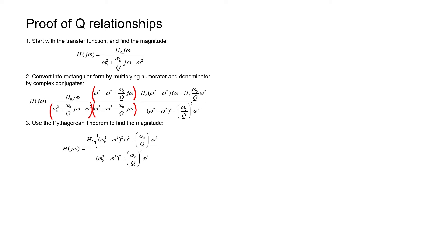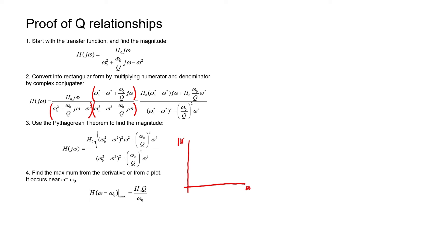That will get rid of the imaginary number in the denominator. After multiplying these two terms together in the denominator, we just have a real number. Up in the numerator, we have an imaginary number and a real number. Now I'm going to find the magnitude. In Bode plots, we're interested in how the magnitude of the transfer function changes. I've used the Pythagorean theorem here — we've gone a distance along the real axis and a distance up the imaginary axis, making two sides of a right triangle, and we square them and take the square root to find the hypotenuse. The result is just the magnitude of the transfer function.